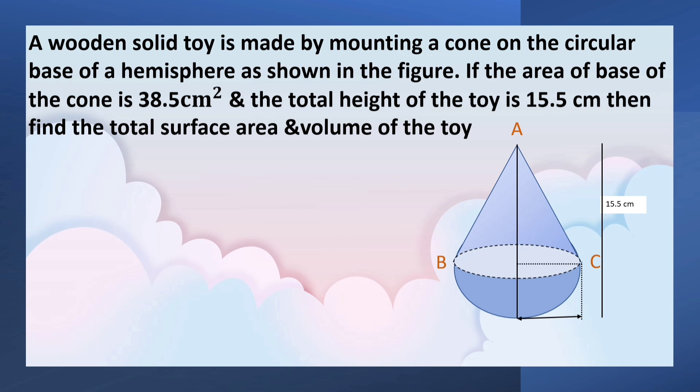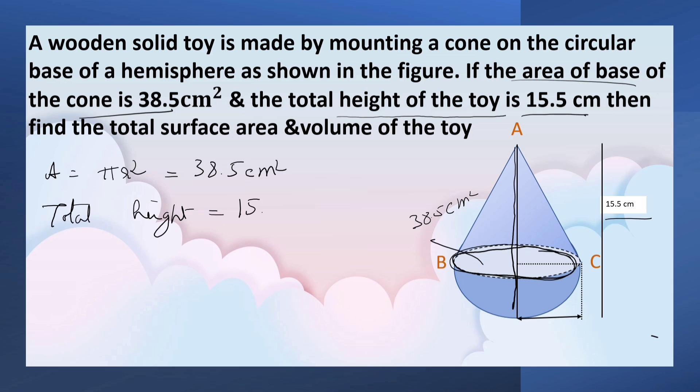Here, we are given area of the base of the cone, that is 38.5 cm². Base of the cone is circular in form, so πr² equals 38.5 cm² and total height of the toy, that is 15.5 cm. Now, we have to find the total surface area and volume of the toy.